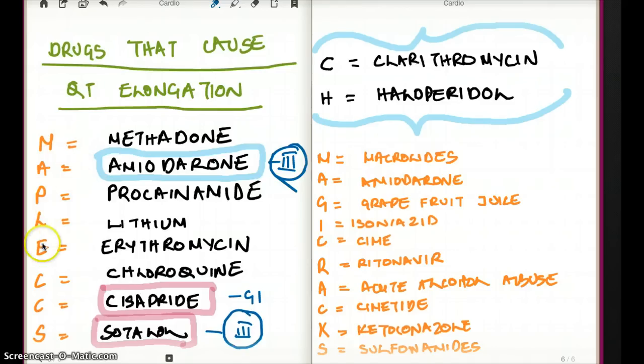So again, one more time, the mnemonic is MAPLE: methadone, amiodarone, procainamide, lithium, erythromycin, and SYRUP, as in CCS: Chloroquine, Cisapride, and Sotalol.